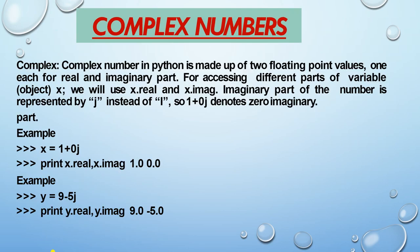Next is complex numbers. A complex number is made of two floating point values — one for the real part and one for the imaginary part. To access different parts of variable x, we use x.real and x.imag. For example, x = 1+0j — here 1 is the real part and 0 is the imaginary part. print(x.real) gives 1.0 and print(x.imag) gives 0.0, both as floating point numbers.